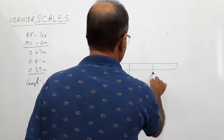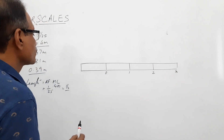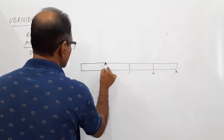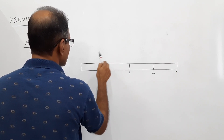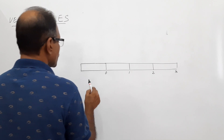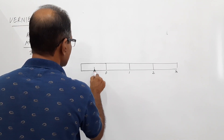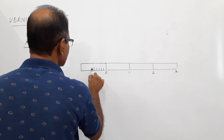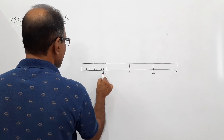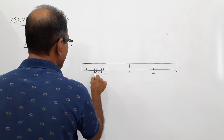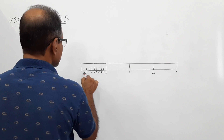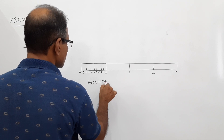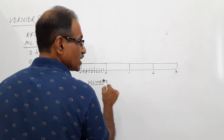Label the divisions zero, one, two, three. Divide the leftmost division into ten equal parts, just like in the case of a plane scale, and write one through ten. The unit is decimeters, and the larger unit is meters.